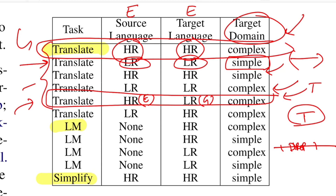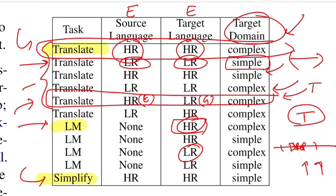Similarly, for low-resource to low-resource auto-encoding you use the simpler domain version. For translation tasks, e.g., English (high-resource) to German (low-resource), monolingual translation data is assumed available. Language modeling tasks use monolingual data in either high or low resource to train the decoder to predict one token at a time. The main simplification task uses parallel sentences only in the high-resource language — these four tasks together form the multitask training setup.